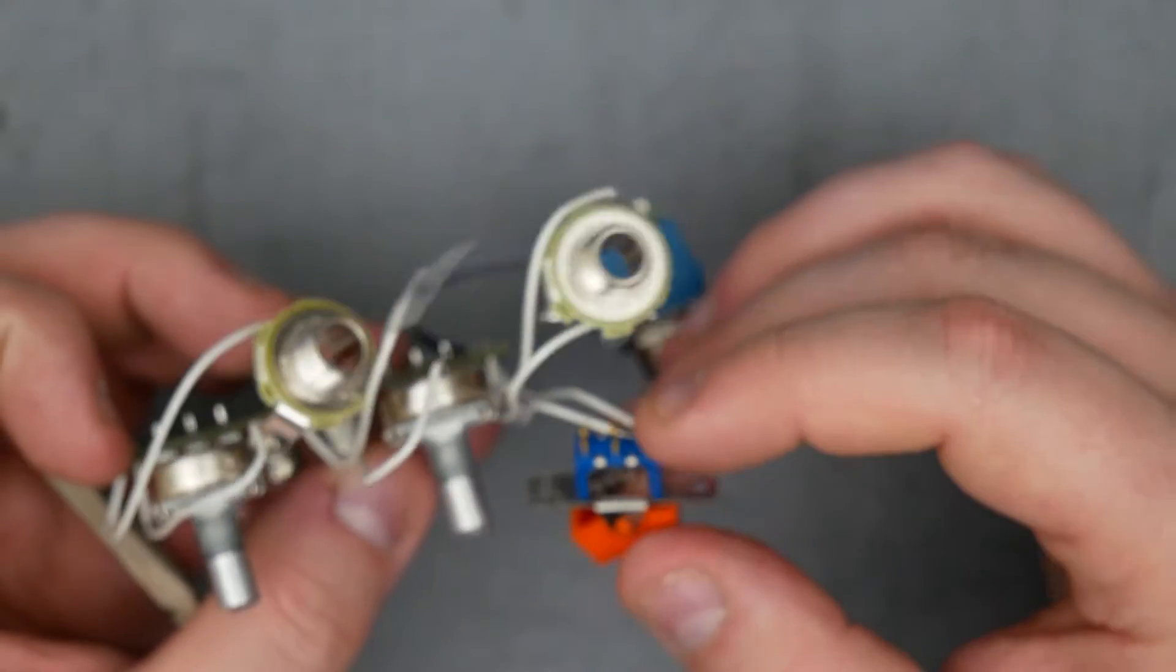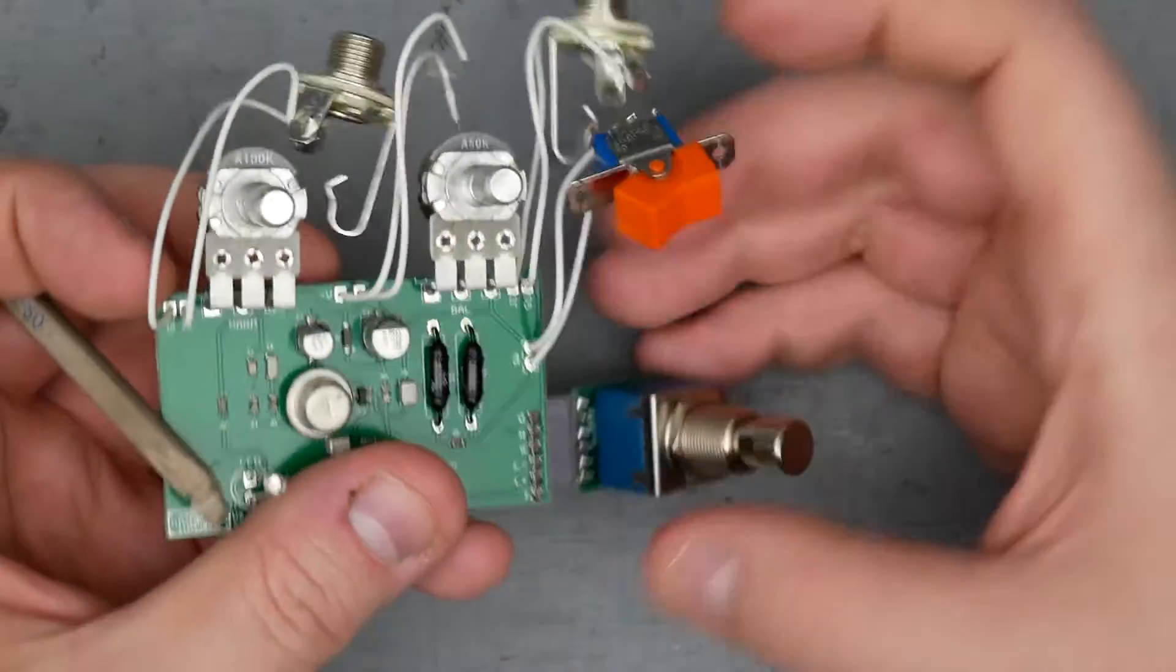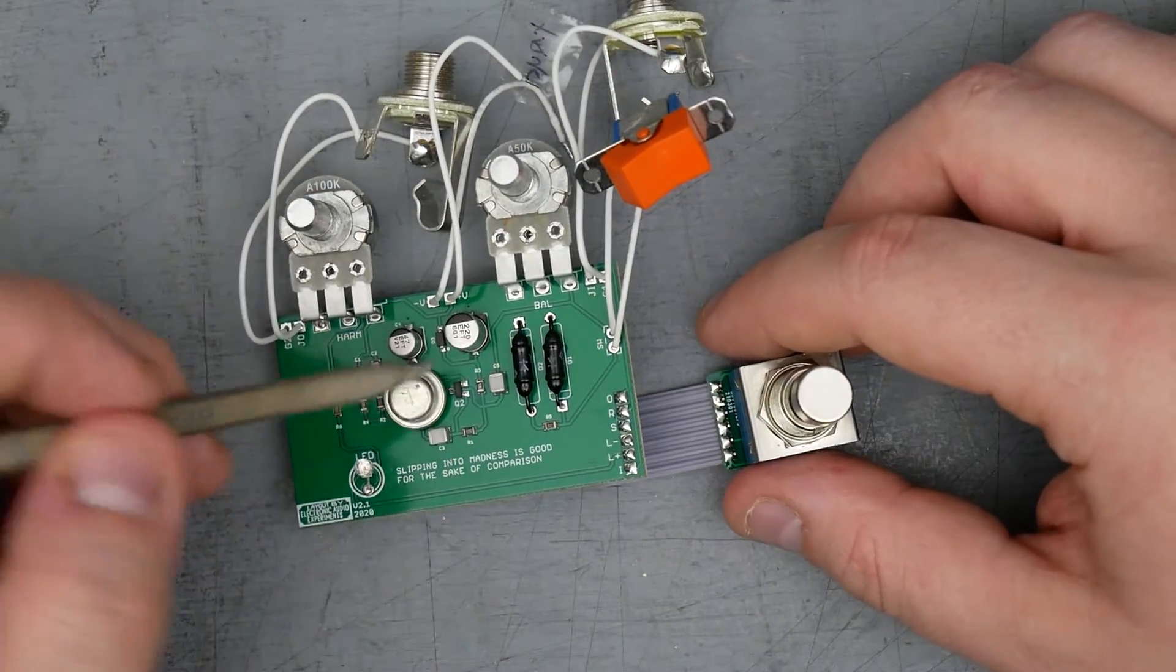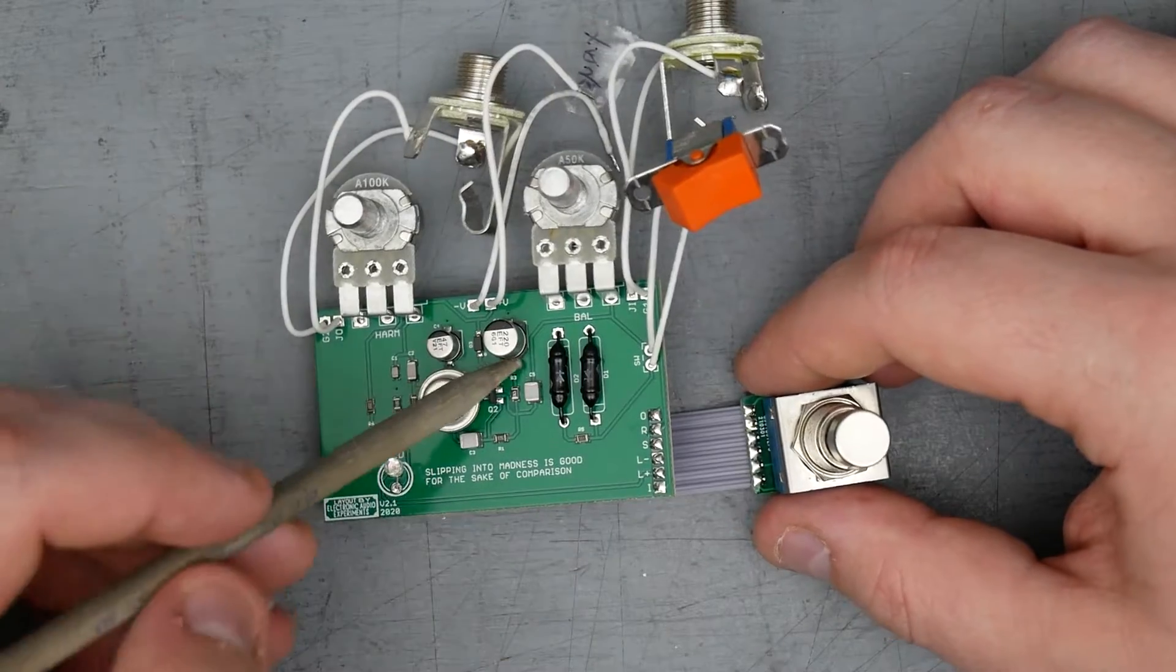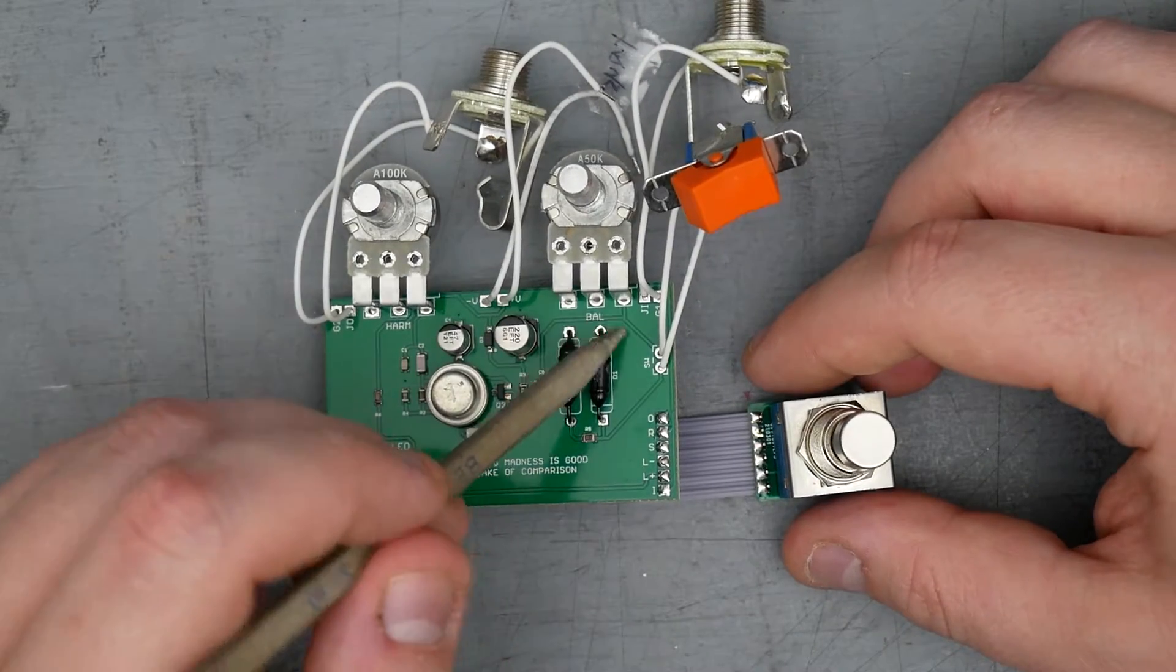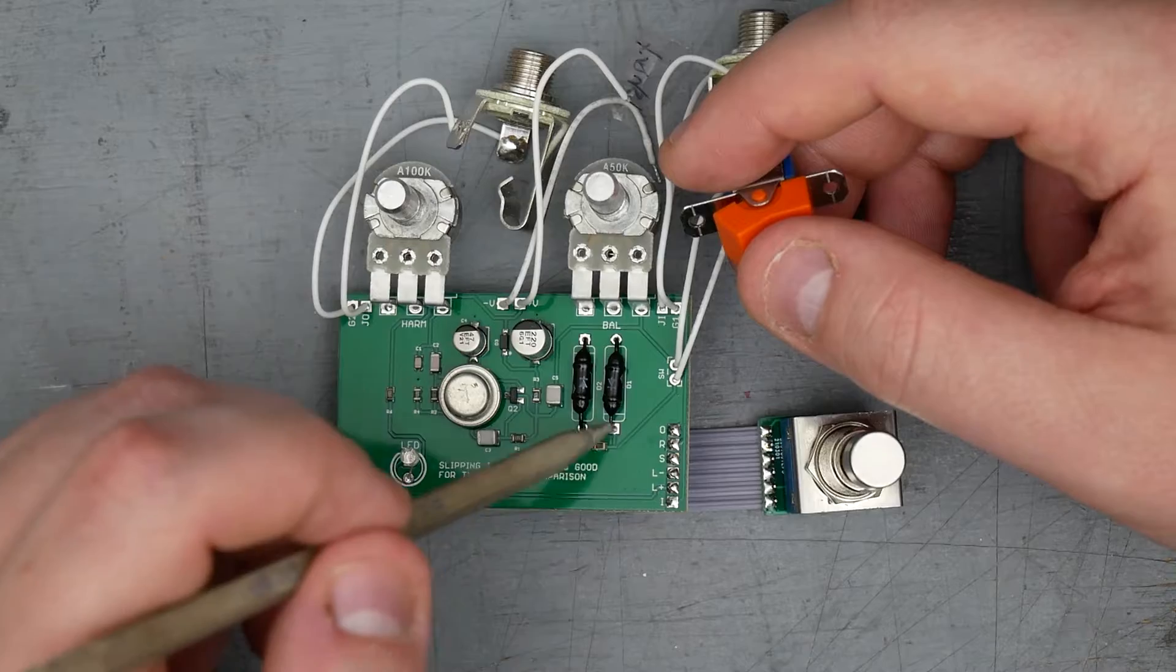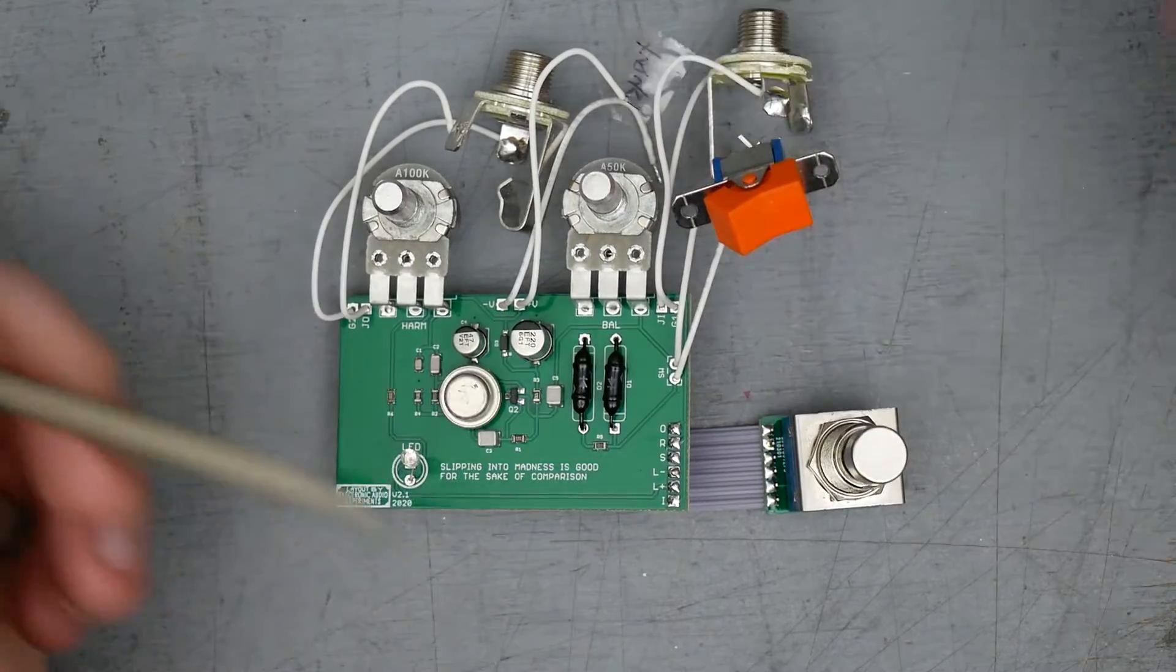That is being used essentially just as like a single pull, single throw, connecting these two points together. And what that's doing is it is bringing these two hard clipping diodes in or out of circuit. So you have the output from the circuit coming through this capacitor here. And that is moving up through this trace out here to the balance pot, which is essentially like your volume pot. And that trace also comes over here to the switch. So when the switch is in one position, it is connecting these diodes to ground. They're already connected to ground on this side. They're just out of circuit through the switch. But when you throw the switch, it makes the connection and then the diodes are in circuit.